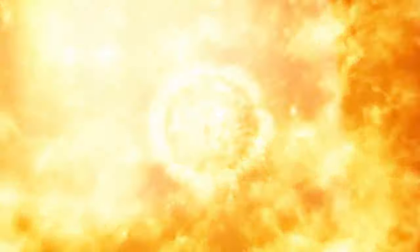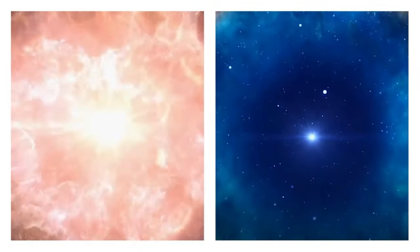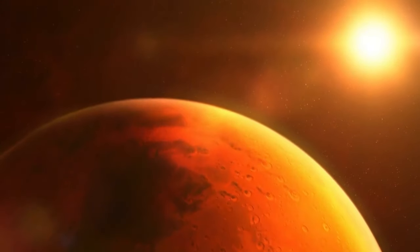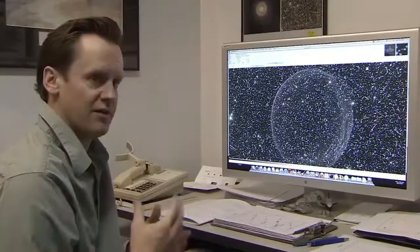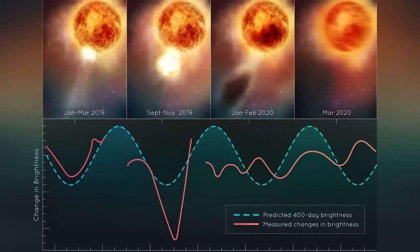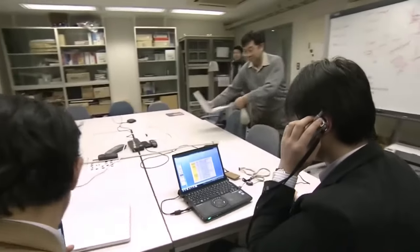Ozone depletion due to a Betelgeuse supernova would probably be small and temporary, according to studies and simulations. The ozone layer can naturally restore itself over time, unaffected by long-term exposure to things like certain compounds produced by humans. So, although the ozone layer could get thinner for a few while after the supernova's UV burst, it won't hurt Earth's ecosystem or any living forms therein in the long run.